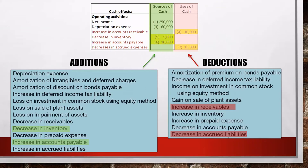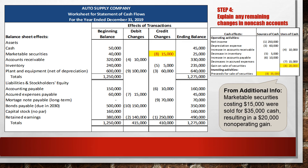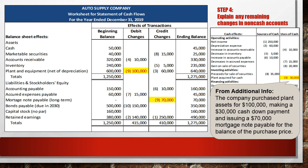All the remaining information relates to investing and financing activities. From the additional information provided, we know that marketable securities costing $15,000 were sold for $35,000 cash, resulting in a $20,000 non-operating gain. There are two parts to this adjustment: the $20,000 gain on the sale of securities is related to operating activity and is a deduction from net income, while the $35,000 of proceeds from the sale is a cash inflow reported in the investing activities section. The company also purchased plant assets for $100,000, making a $30,000 cash down payment and issuing a $70,000 mortgage note payable for the balance.